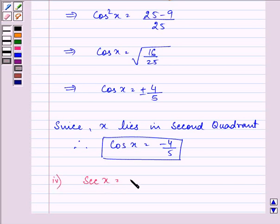So we can find sec x that is 1 divided by cos x which will give us minus 5 by 4 as its value.